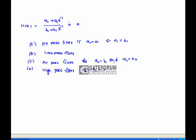For the next question, we have to decide what kind of filter it is. Writing H(e^jω) = (a₀ + a₁·e^(−jω)) / (b₀ + b₁·e^(−jω)), as omega tends to infinity it is going to be a constant, and as omega tends to zero it is also a constant.